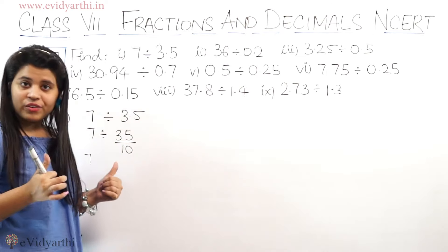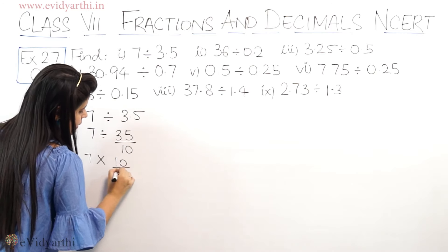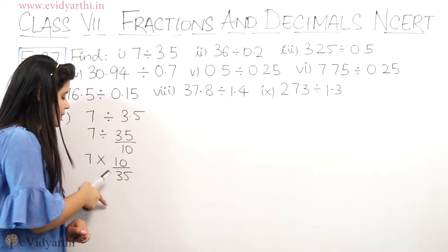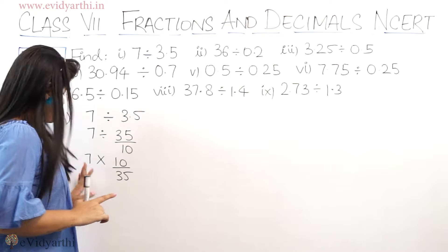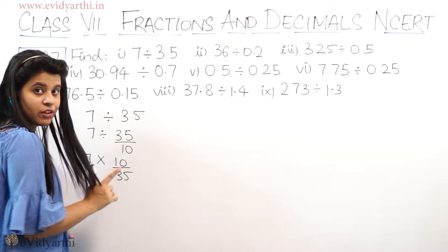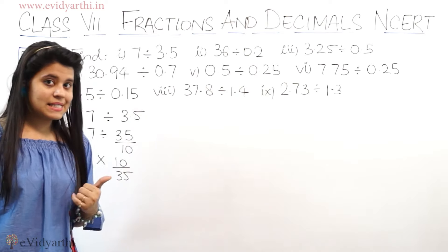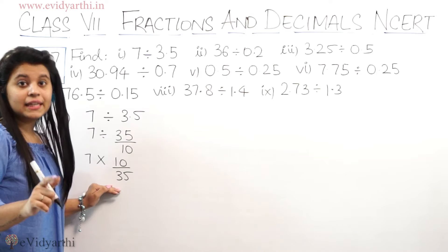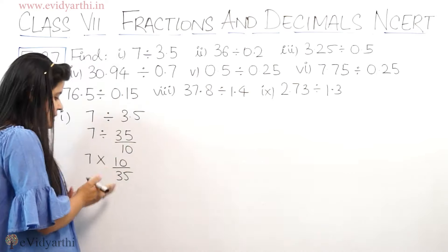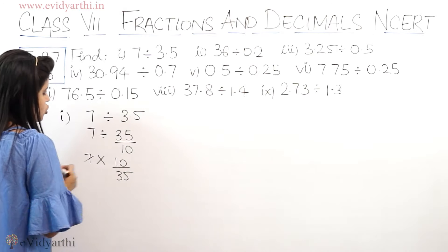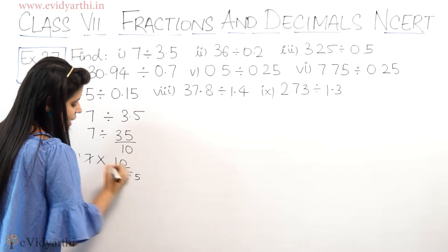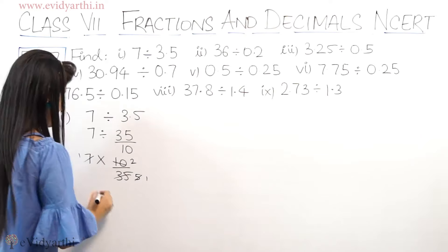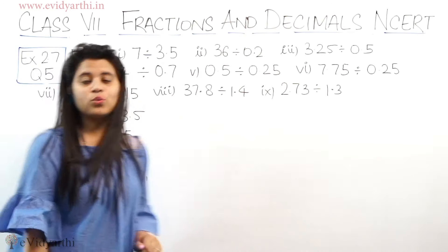Now division in fraction form नहीं हो सकता, so we multiply. Division की जगह multiply लिखा है और जो बाद वाला number था उसका reciprocal कर दिया. So we get 7 multiplied by 10 upon 35. मैं 7 और 35 को cut कर सकती हूँ — 7 times 5 is 35, so that gives 5. Then 5 and 10 also cut — 5 times 2 is 10. So this gives 2. The answer is 2, which is a whole number.